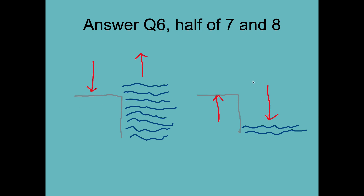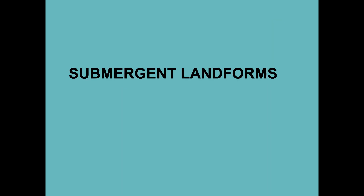This is the emergent landform side. The only way you're going to get a landform that used to be at or below sea level and has now emerged is because the land has gone up or the sea level has gone down — and we can count sea level falling out, so it must be isostatic uplift. Which means submergent landforms must be because either isostatically your land is being squashed, or eustatically sea levels are rising. Think submarine — these used to be above the sea and they're now underneath, just like a submarine. And there are two landforms.